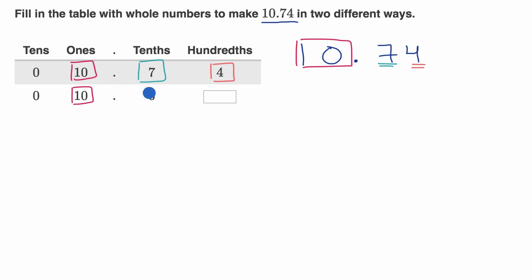So if I were to take a tenth from the tenths place, a tenth is worth 10 hundredths. So one way to think about it is, they're taking a tenth from there. So now this is going to be six tenths.